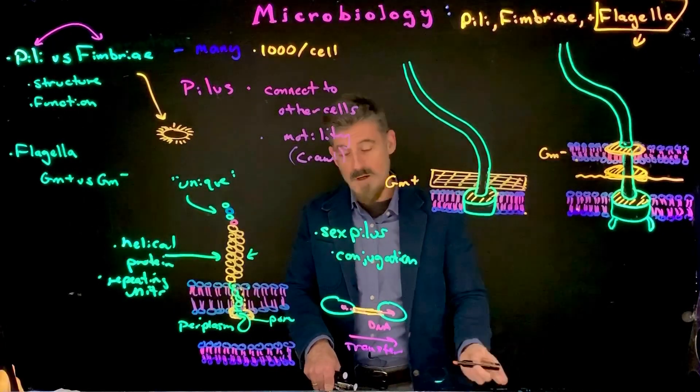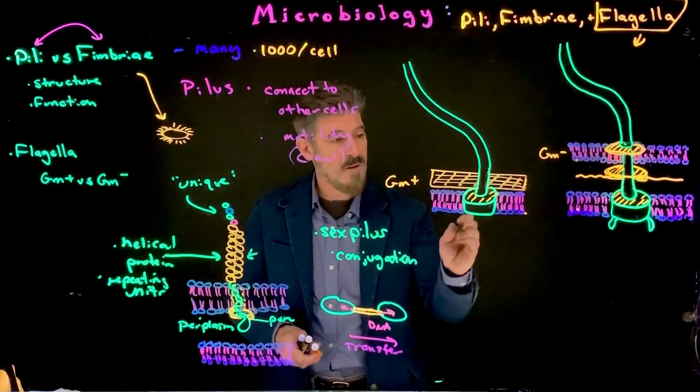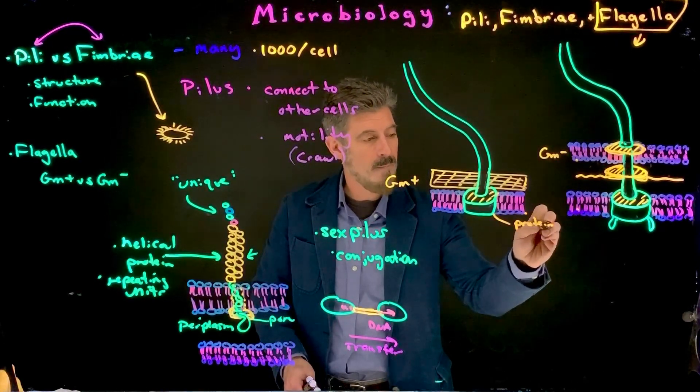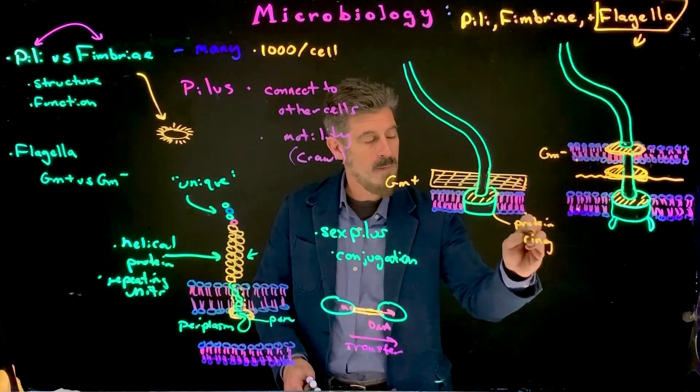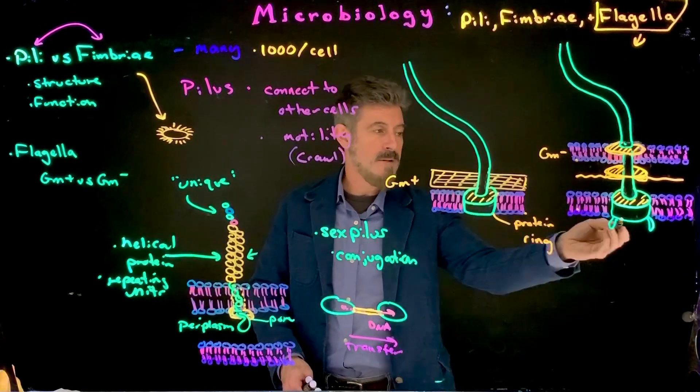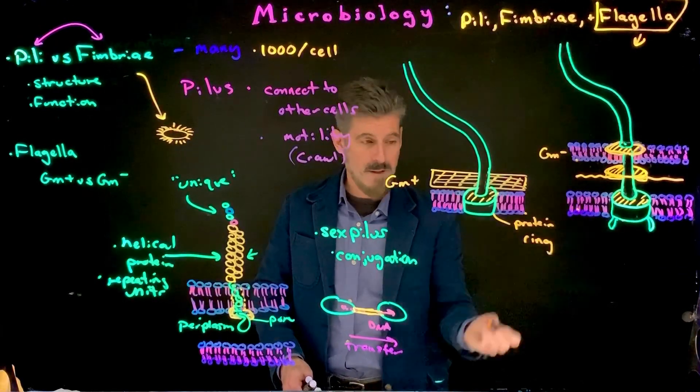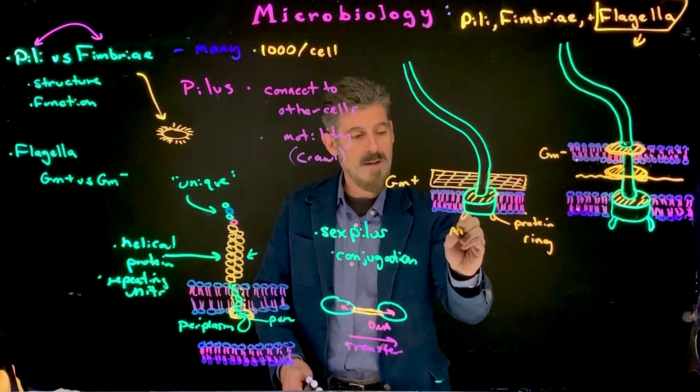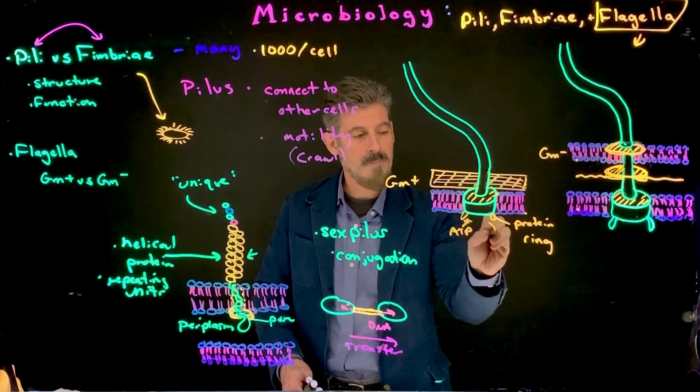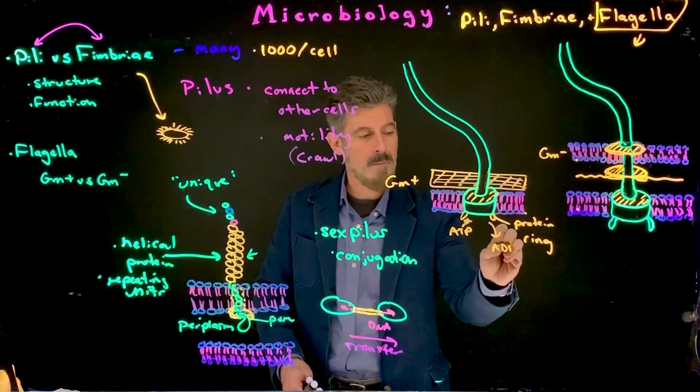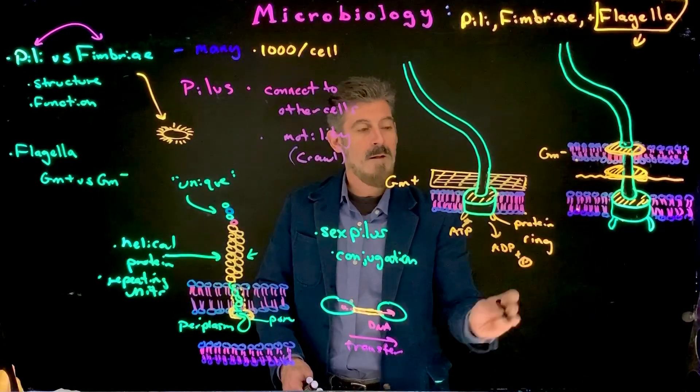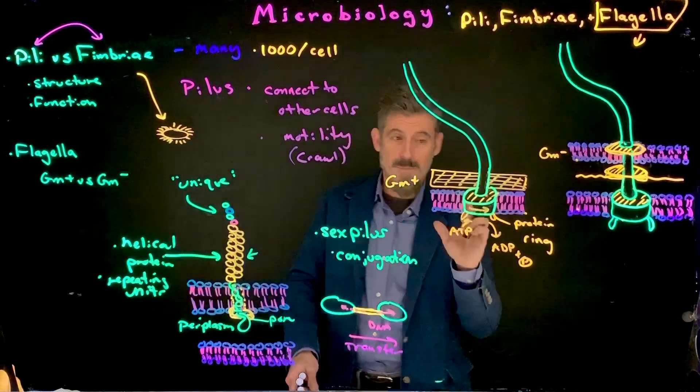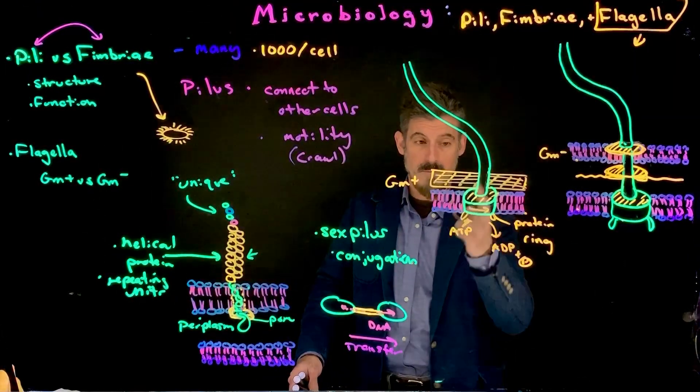So, starting off, what we have are this protein ring that's embedded in the cell membrane, and that's going to be the case for both. Typically, there are proteins associated with it that can bind ATP and use ATP to provide a force that can spin this protein ring.